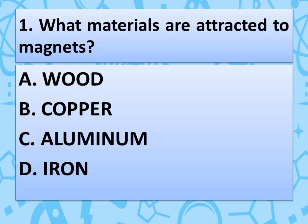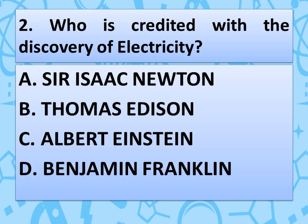Let's start with our first question: What materials are attracted to magnets? Wood, copper, aluminium, or iron? You can pause the video to think about the correct answer. The correct answer is option D — iron.